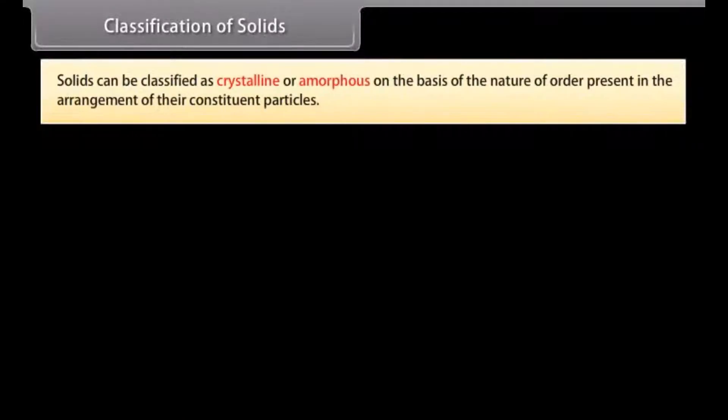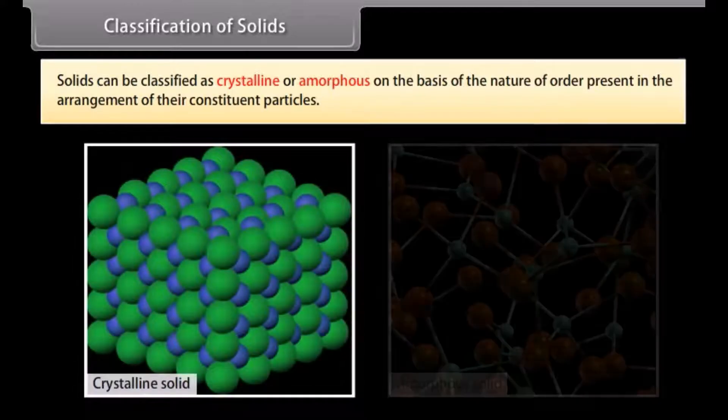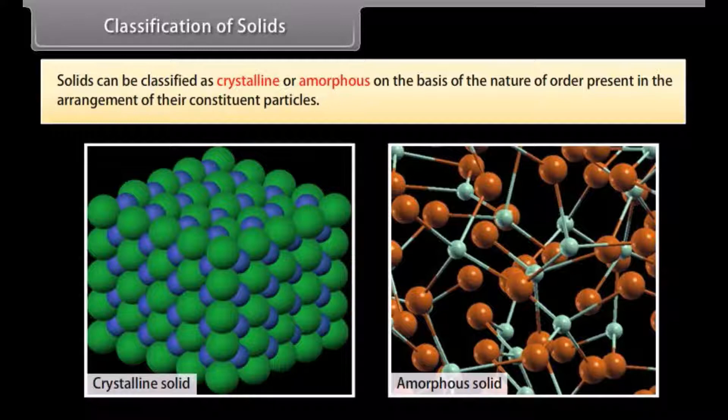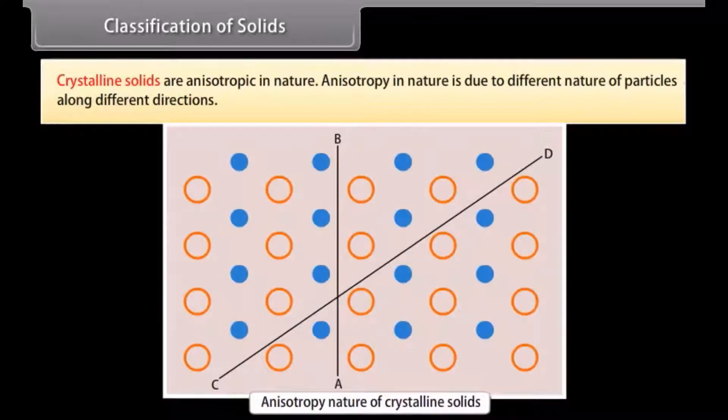Classification of solids. Solids can be classified as crystalline or amorphous on the basis of the nature of order present in the arrangement of their constituent particles. Crystalline solids are anisotropic in nature. Anisotropy in nature is due to different nature of particles along different directions.